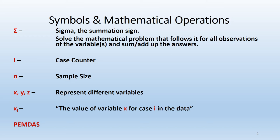This is known as the summation sign. When you see this sigma within a mathematical formula, it's telling you to solve the mathematical problem that follows it for all observations of the variable or variables, and then once you solve for each observation, you sum or add up the answers.